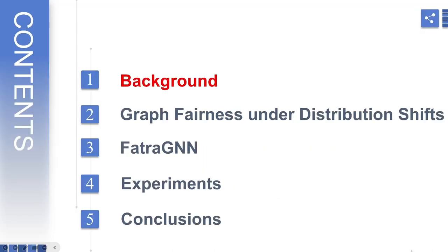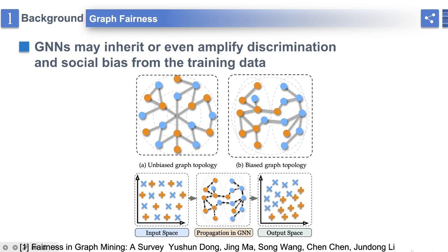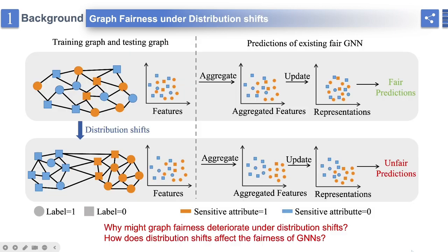Let's begin from the background. Despite the success of GNNs, there is a growing concern that GNNs may inherit or even amplify discrimination and social bias from the training data, leading to unfair treatment of sensitive groups with sensitive attributes such as gender, age, region, and race. To mitigate this issue, many fair GNNs have been proposed.